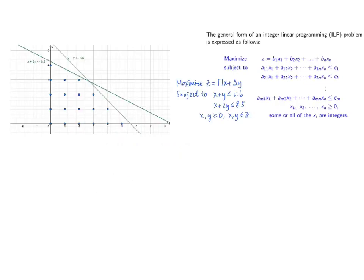Let's refer to a problem containing only two decision variables so that we can illustrate it by a graph. Suppose we have a pure integer programming problem with a linear objective function z equals a constant times x plus a constant times y, subject to two inequality constraints. We have both x and y greater than or equal to zero, and they are integers.